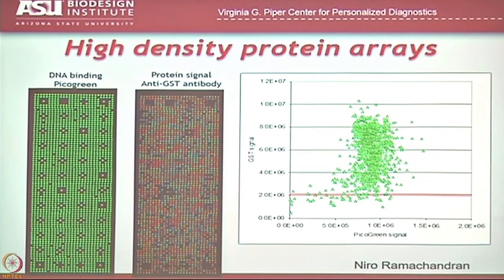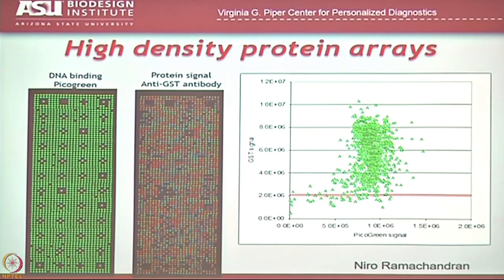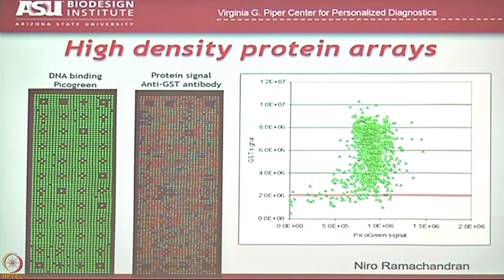On the left is one of our typical arrays — around 2,300 genes or proteins printed on the array. The signal you're looking at is the DNA signal. We stain the chip every time we make one for DNA, and that tells us our printing was good. Remember, what we're printing is DNA, so if we stain with PicoGreen and see even staining, that means we did a good job of printing even amounts of DNA. Then we convert it to protein and measure it with anti-GST, which tells us how much protein we have on the array and that we can express and capture the protein as well.